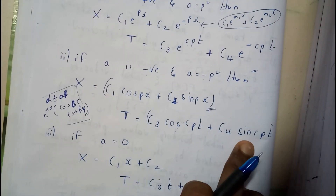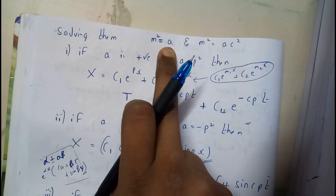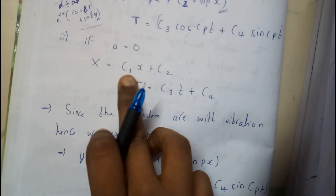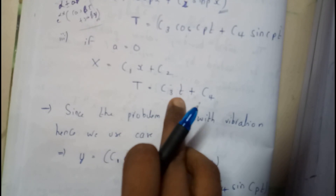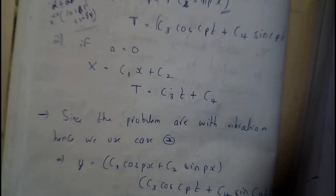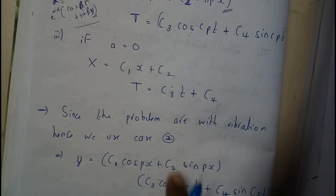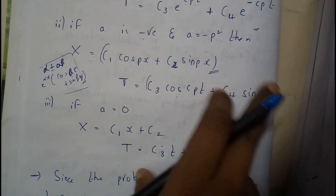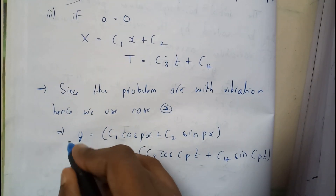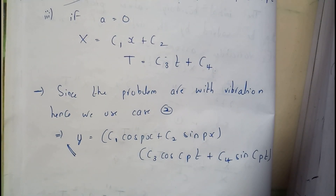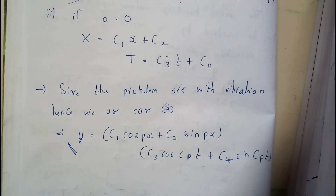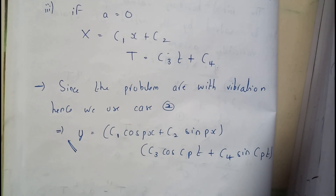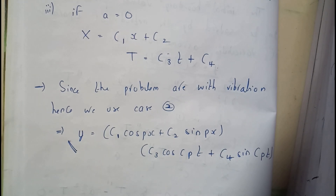When a = 0, we get two equal roots, giving c₁x + c₂ for X and c₃t + c₄ for T. Now, the wave equation will have sine and cosine behavior — so among the three cases, only the second one (a = −p²) contains sine and cosine. Therefore, the second case is the exact solution for wave equation problems and we'll use that formula. In the next video we'll go through the problems. Thank you for watching.